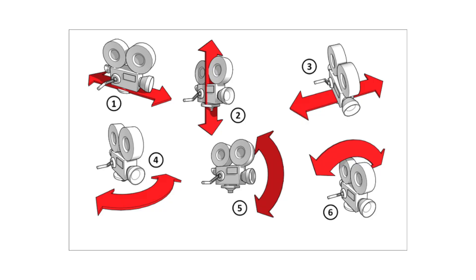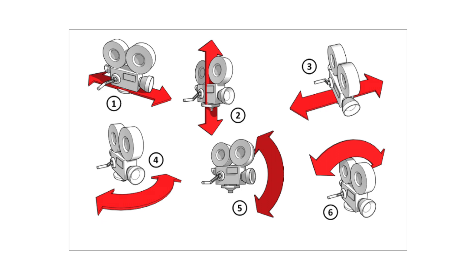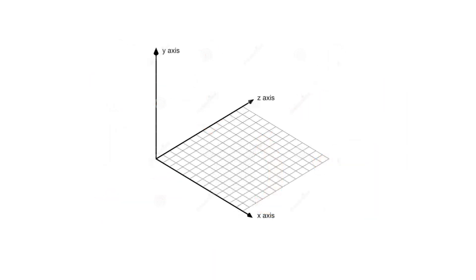A camera exists in a three-dimensional world and you can move anywhere along the X, Y, or Z axis. This means it can move up and down, left and right, as well as forward and back. So that the director and camera operator can effectively communicate, there are names for each of these moves. This means the director can give verbal instructions and the camera operator knows exactly what to do without anyone having to draw diagrams. I'll be moving outside to shoot some video that shows what each type of camera move actually looks like.